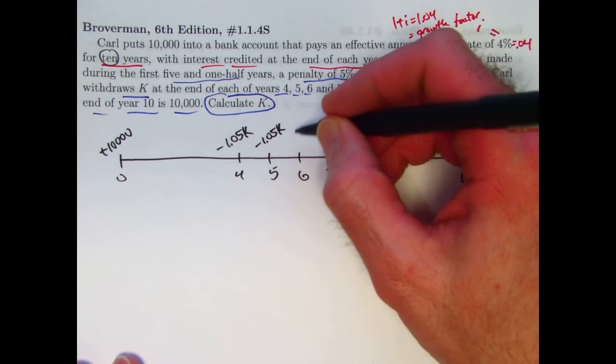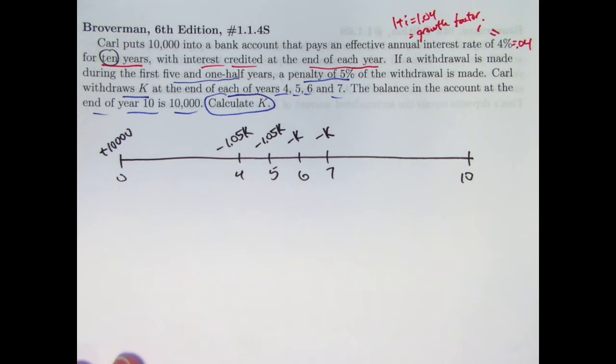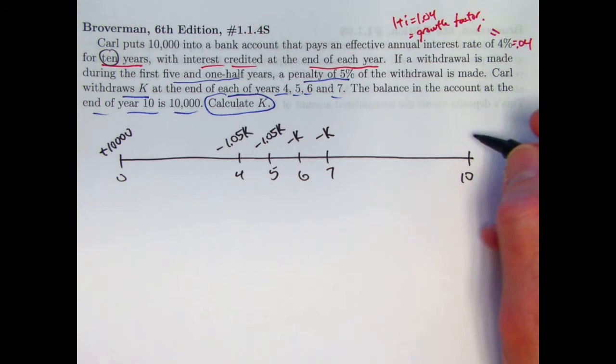At the end of year 6 and 7, there's no penalty, so I just withdraw K at the end of those years. My final amount at the end of year 10 is 10,000. That's just my final amount. Let me put this up higher.